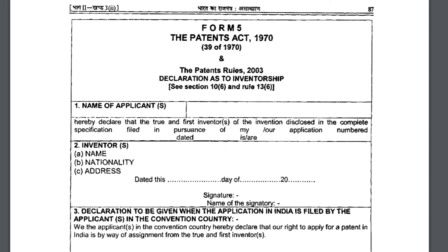In Form 5, a declaration must be made by the true and first inventor. In clause 1, the applicant declares the true and first inventor of the invention disclosed in the complete specification filed in pursuance of their application number. In clause 2, the inventor has to sign it and prove that he is the true and first inventor of the application.